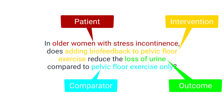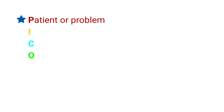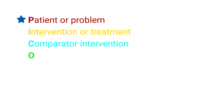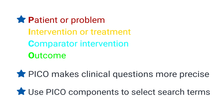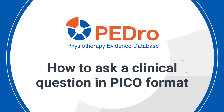We have just demonstrated how to ask a clinical question about the effects of a physiotherapy intervention in PICO format, where P is the patient or problem, I is the intervention or treatment, C is the comparator intervention, and O is the outcome. Using the PICO format makes clinical questions more precise. This will make it easier to find research to answer your clinical questions. You can use your PICO question to select search terms for your PEDro search, but remember, you do not need to specify all of the PICO components in your search. We hope that you have found this tutorial on how to ask a clinical question in PICO format useful.